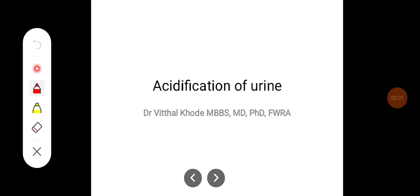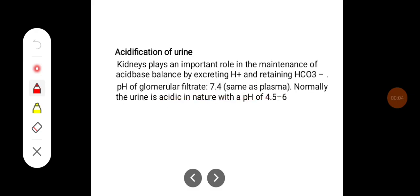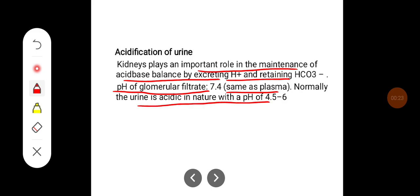Hello everyone. In this class we will try to learn about acidification of urine. Kidneys play an important role in maintenance of acid balance by excreting H+ ions and retaining bicarbonate. The pH of glomerular filtrate is around 7.4, which is the same as that of plasma. Normally urine is acidic in nature with a pH of 4.5 to 6.